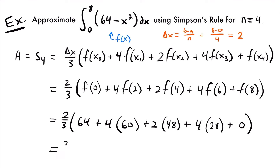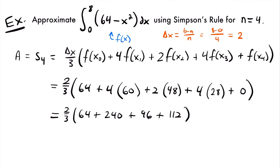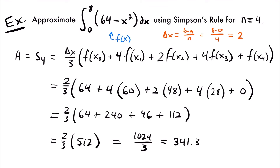So this becomes 2 thirds times 64 plus 4 times 60 — which is 240 — plus 2 times 48 — which is 96 — plus 4 times 28 — which is 112 — plus 0. Adding these together gives 2 thirds times 512, which equals 1024 divided by 3, or approximately 341.3 repeating. This is our approximate value of the area under the function from 0 to 8 using Simpson's rule with 4 subintervals.